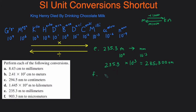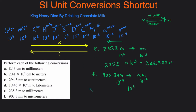The last one: 903.3 nanometers converting to micrometers. Nanometers is 10 to the negative 9 and micro is 10 to the negative 6. The absolute difference is 10 to the 3. We're going from nano to micro — moving to the left — so we divide: 903.3 divided by 1000 gives 0.9033 micrometers.